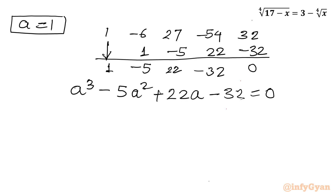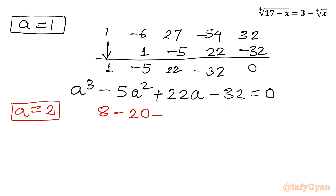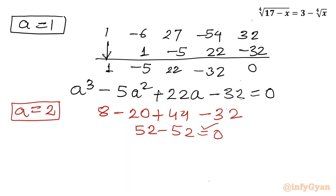Testing a equal to 2 in the cubic: 2³ minus 5·(2²) plus 22·2 minus 32 equals 8 minus 20 plus 44 minus 32, which is 52 minus 52 equal to 0. So a equal to 2 is a root of the cubic equation.